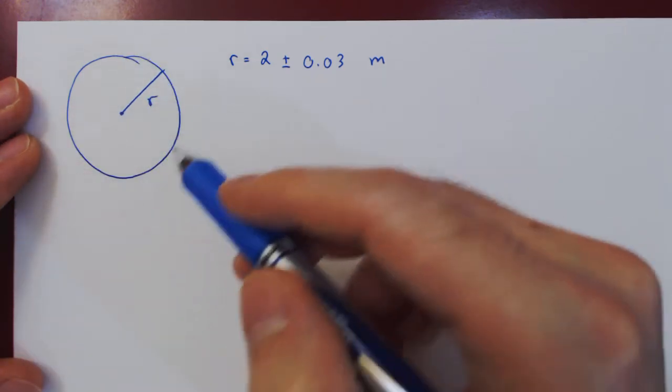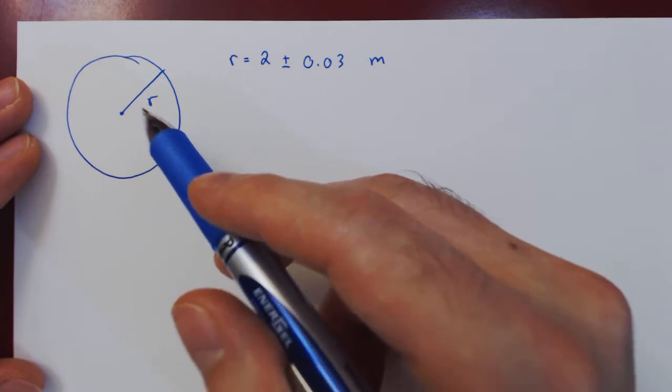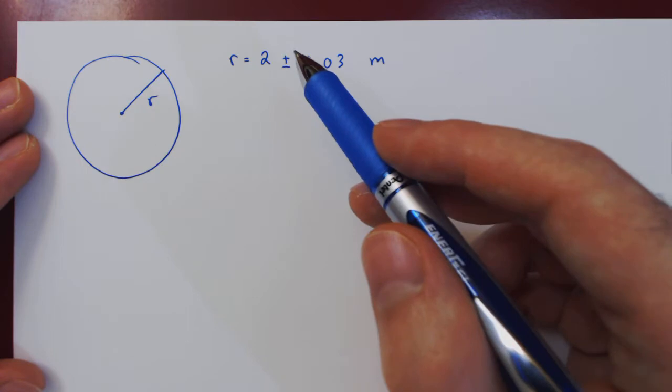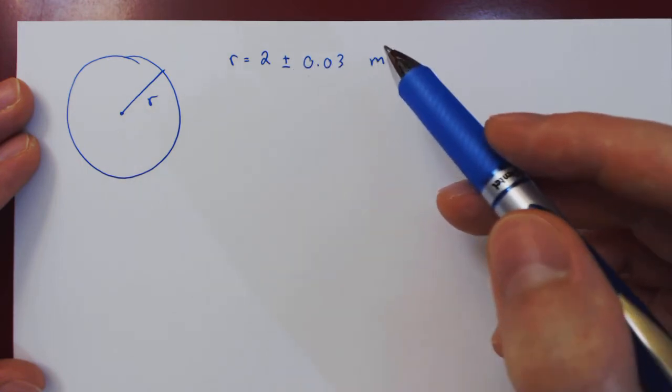Let's assume we have a circle of radius r, where we have the value of the radius with uncertainty. Say r equals 2 plus or minus 0.03 meters.